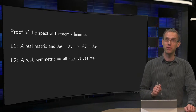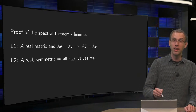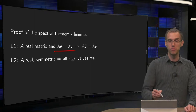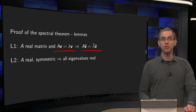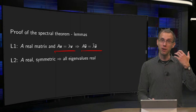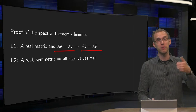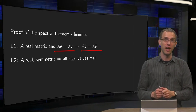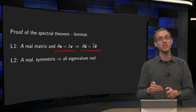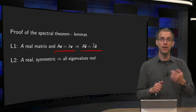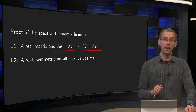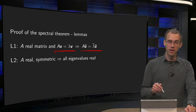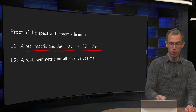So there we go with the two lemmas. First one: if A is a real matrix and A times V equals lambda V, then A times V-bar equals lambda-bar times V-bar. So if lambda and V are an eigenvalue and eigenvector of a real matrix, then the complex conjugates lambda-bar and V-bar are also an eigenvalue and eigenvector.